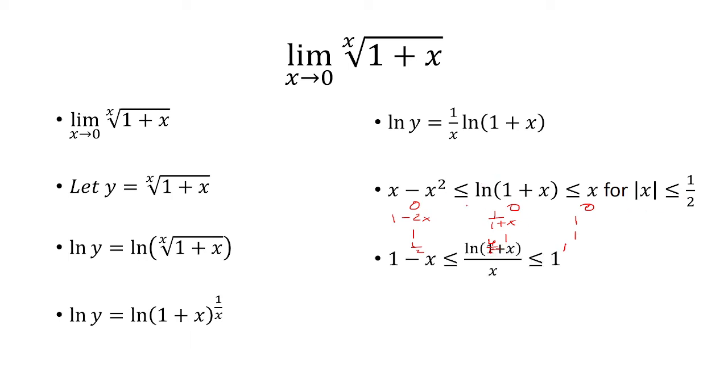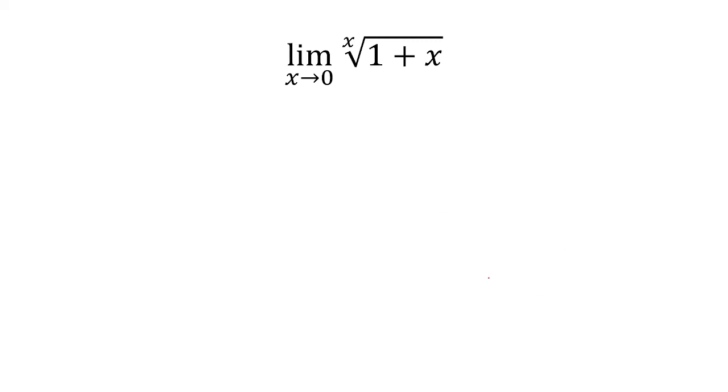And so, if I divide both sides by x, I'm left with 1 minus x is less than or equal to ln of 1 plus x over x, less than or equal to 1. Taking the limits of these two sides, you find that the limit is 1. And so by the squeeze theorem, ln of 1 plus x over x also has to be 1.